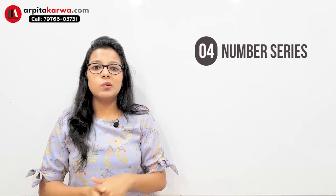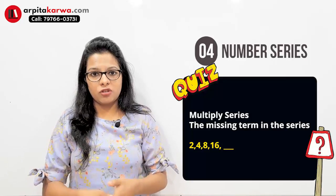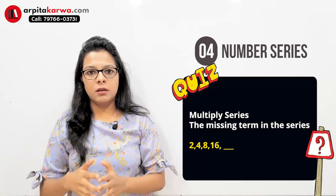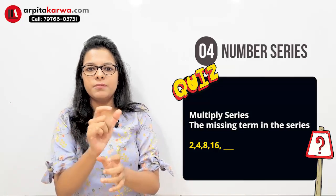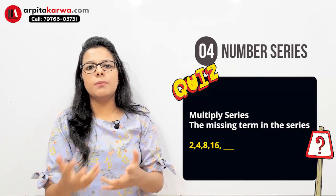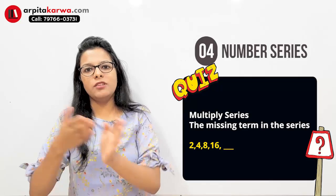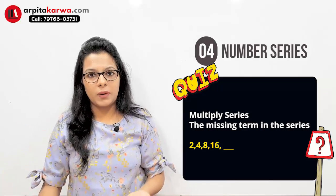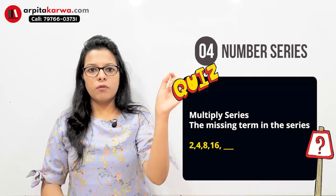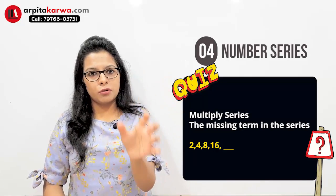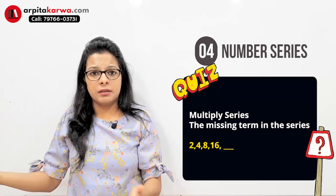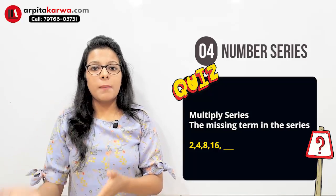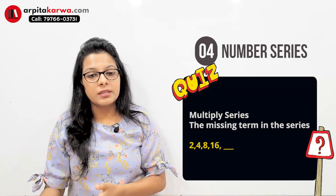One type of number series is a multiplication series — for example: 2, 4, 8, 16. You simply see that every digit is multiplied by 2, so the next digit is 32. It is very simple. Another type is a square or cube root series.